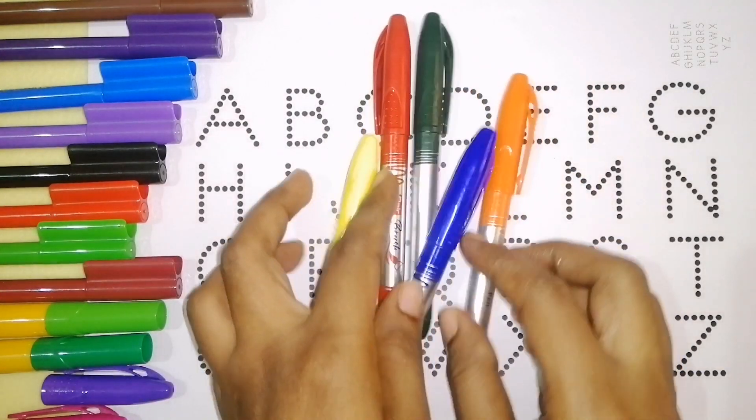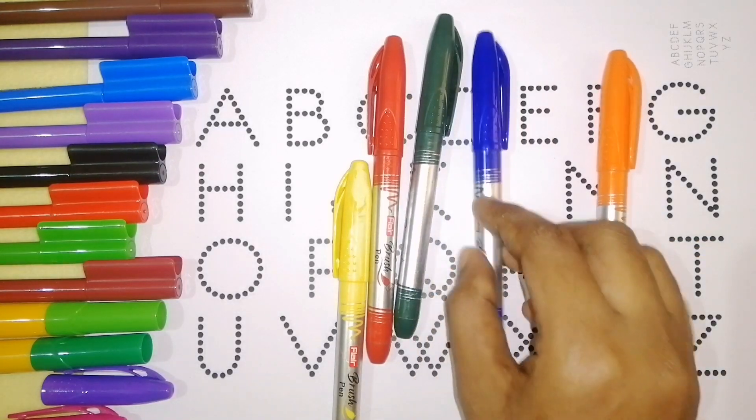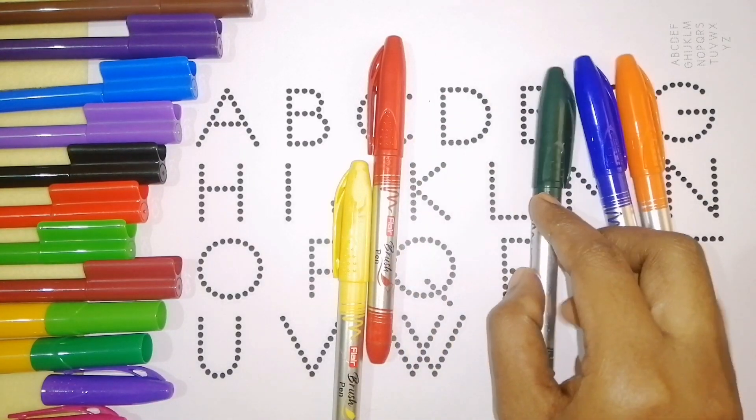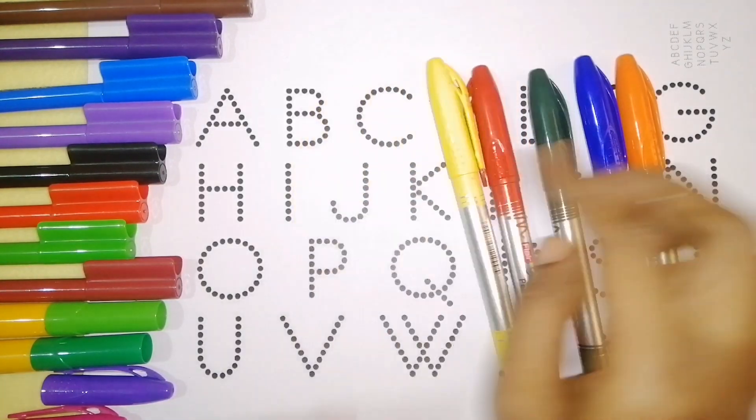Color names: orange color, blue color, green color, red color, yellow color.